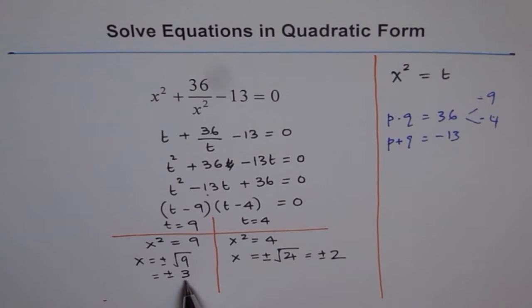Remember, minus 3 squared is also 9. Minus 2 squared is 4. So, both are the answers. So, whenever you are square rooting on both sides, remember to put the sign plus and minus, correct?